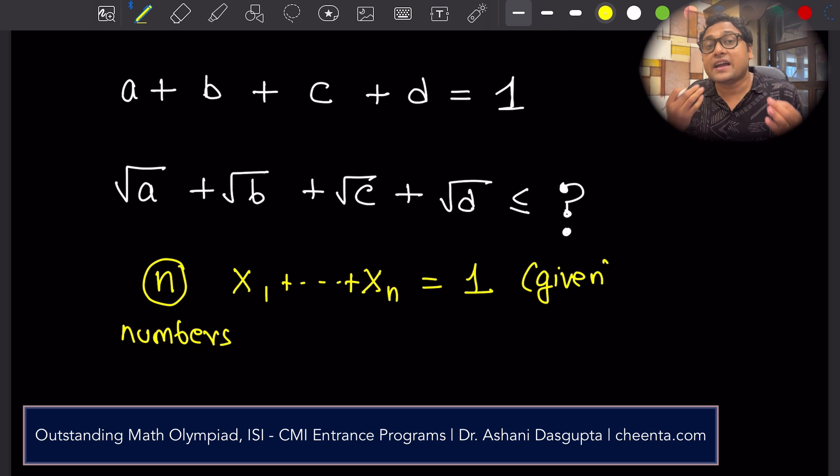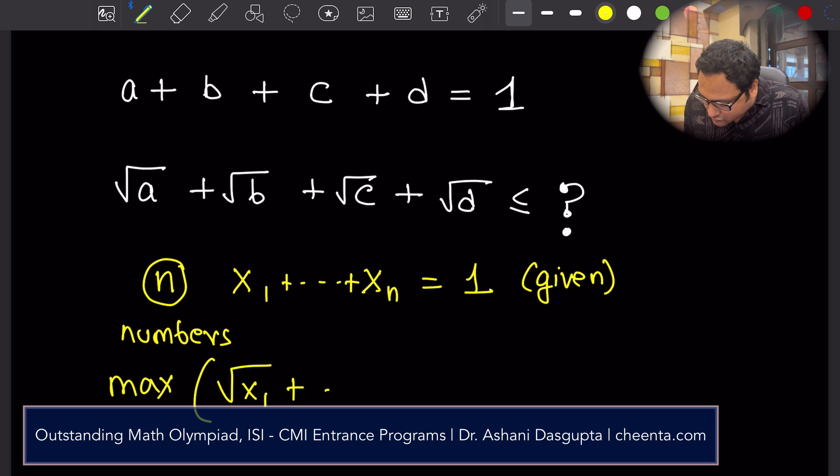We want to find out the maximum value of square root of x1 up to square root of xn, sum of these square roots. We want to find out the maximum value of this.